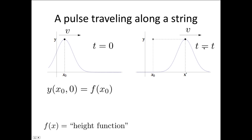At a time t later, the wave has traveled along at a speed v, and so the peak has moved a distance vt. So we can see that x dash is equal to x0 plus vt.